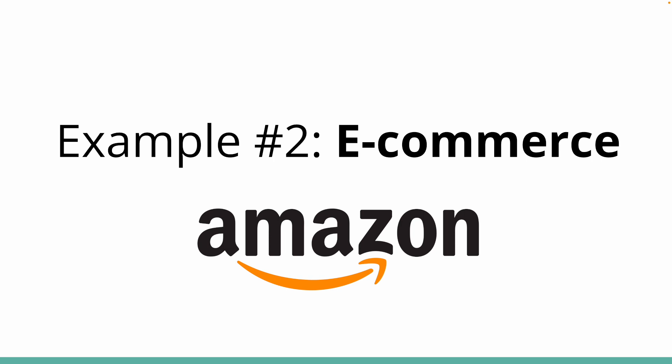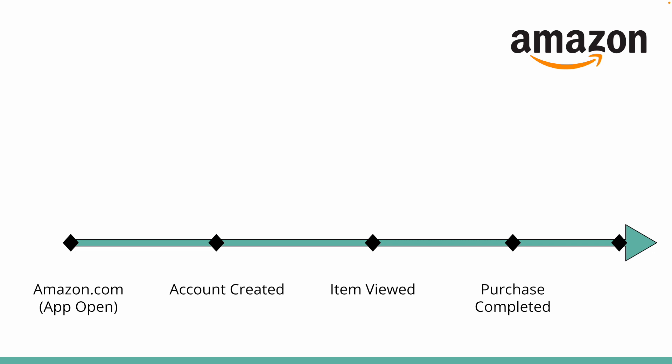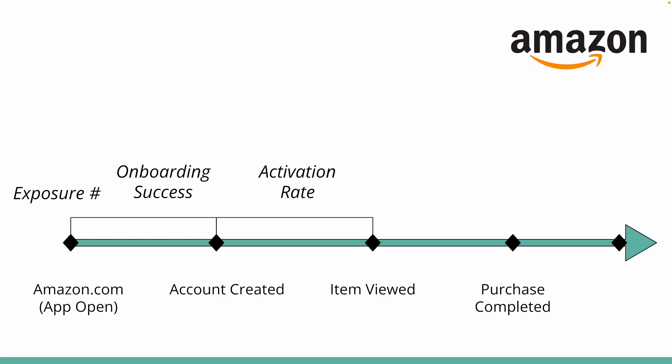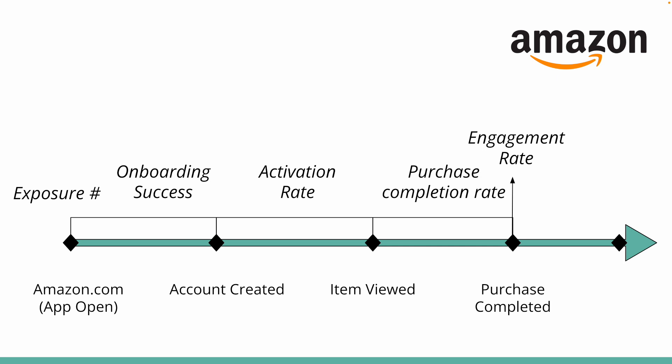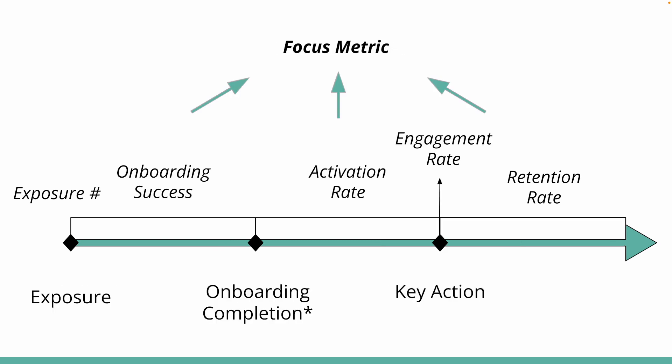For our last example, let's look at e-commerce — imagine a site like Amazon. The exposure point is when you arrive at the homepage, and the onboarding success rate is the conversion from beginning to end of the account creation process. Activation could be when you make your first purchase, but a lot of times people may not buy because you don't have the item they're looking for or it's too expensive — which isn't the product's fault but rather its inventory. So I would set the activation point as when a user views a page for a specific item, and then add a second key action for when the user actually purchases something. Your engagement rate is the number of purchases per purchaser, your retention rate is the percentage of buyers who come back and make another purchase after 30 days, and the focus metric is daily active users since e-commerce products typically get steady daily traffic.